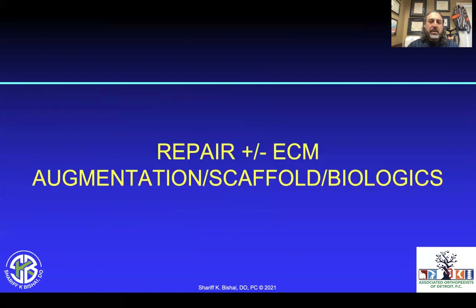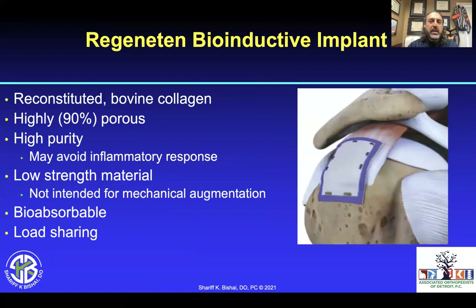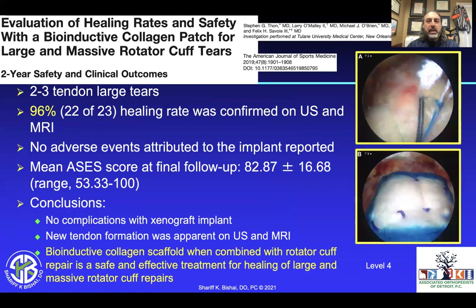What about repair with some sort of extracellular matrix augmentation, scaffold, or biologics? Regeneten has become popular — a Smith & Nephew product that is a reconstituted bovine collagen, 90% porous, high purity, but with varying low structural strength, so it's not going to afford additional strength to the repair. It is bioabsorbable and load-sharing, not load-bearing. In an article by Buddy Savoie and Mike O'Brien, two to three tendon large tears showed a 96% healing rate at two years, far different from the Yamaguchi papers showing 50% re-tears at two years. No adverse reactions were seen, and mean ASES scores increased. This might be a good way to help with augmentation of a large repair.